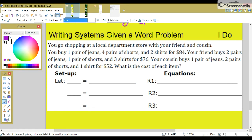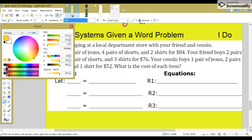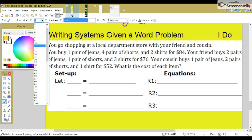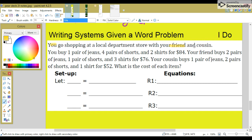First you want to highlight the important keywords. So, you're shopping with you, your friend, and your cousin. You're buying jeans, shorts, and t-shirts. Your friends also buy jeans, shorts, and t-shirts. And your cousins buy jeans, shorts, and t-shirts. And what's the cost of each item?